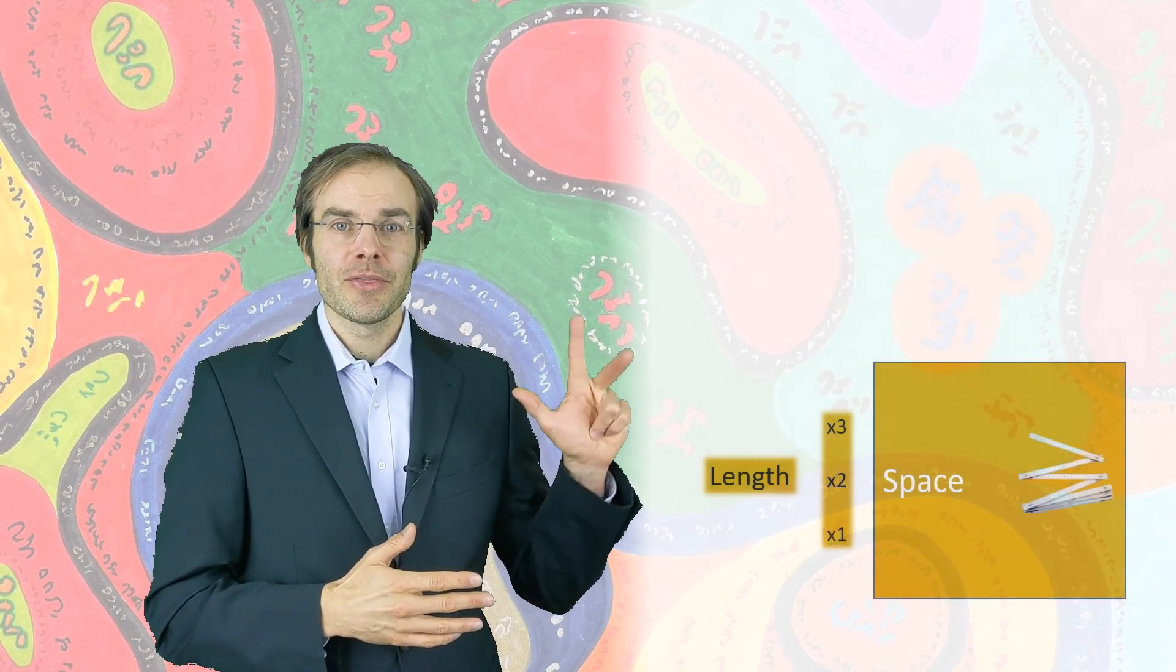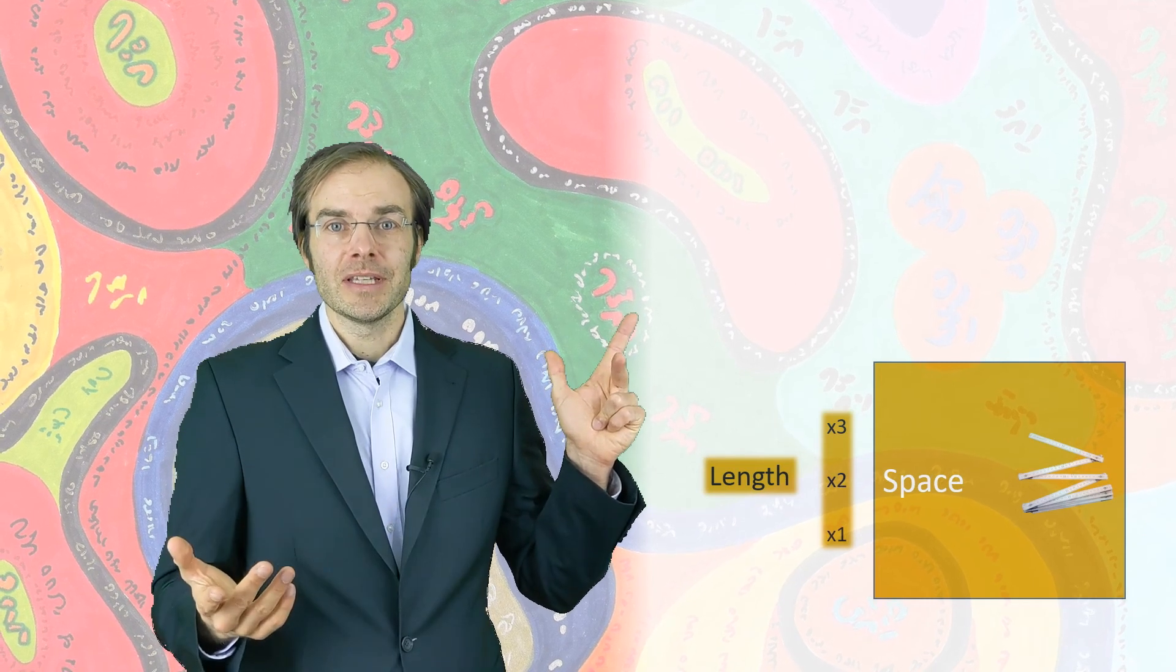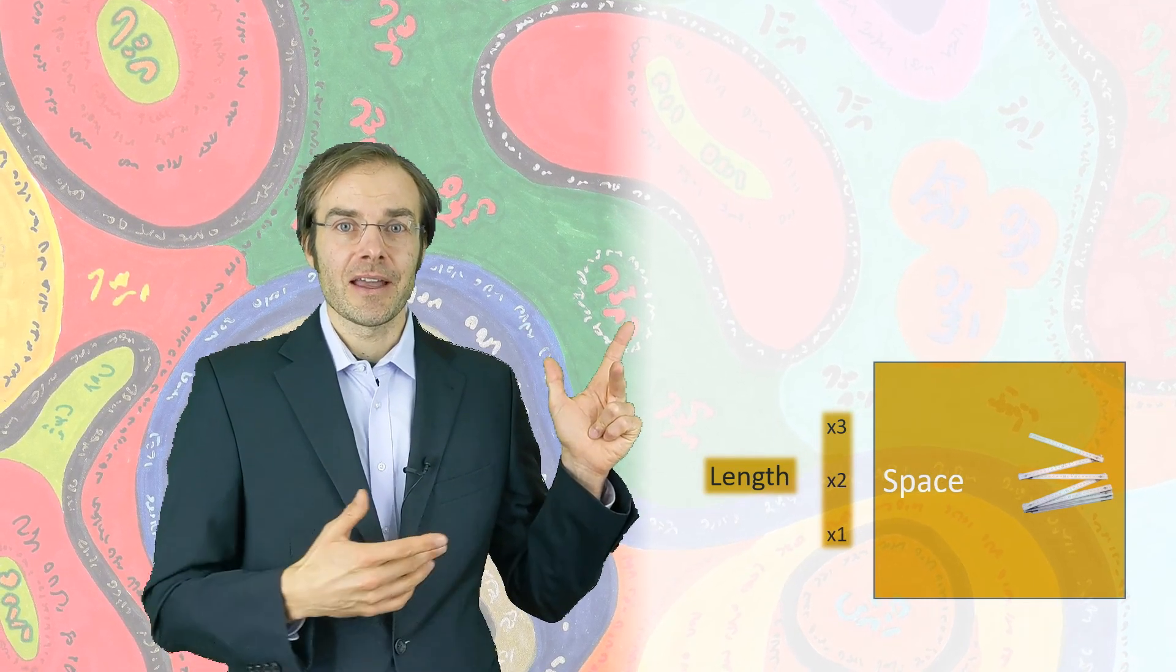But let's start with our dimensions. Everyone knows dimensions one, two, and three: ordinary space, which has length, width, and height.